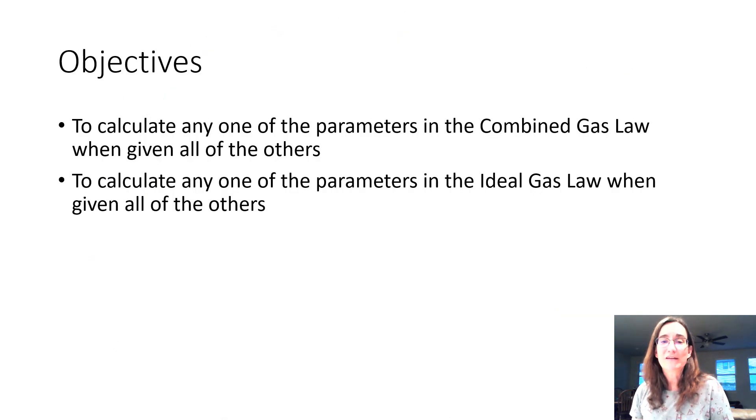And our objective here for either one of these equations is that if we have numbers for all of the parameters or variables in them, except for one, we're able to calculate that one missing parameter.